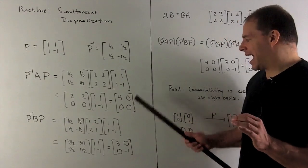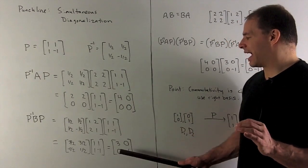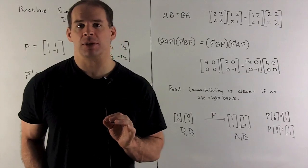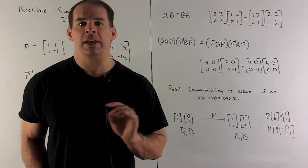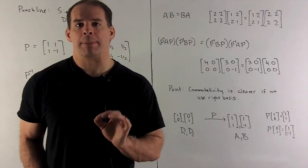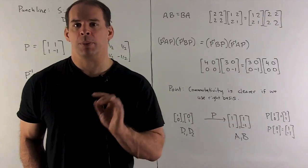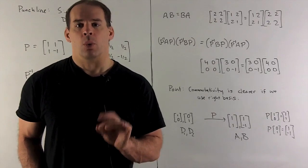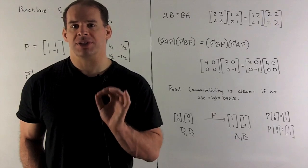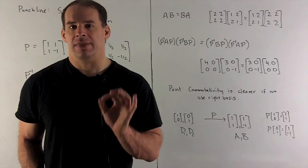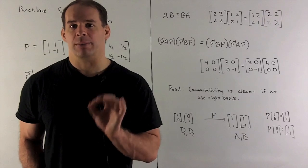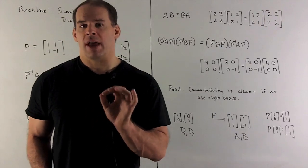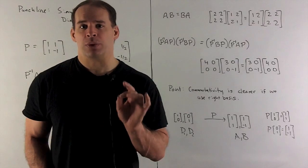Simultaneous diagonalization puts both matrices in diagonal form using the same matrix P. Let's bring things back to commutativity: we showed AB equals BA by brute force matrix multiplication. Once we do our change of basis, the commutativity becomes self-evident — we're just making the statement that diagonal matrices commute. When you don't have a diagonalizing basis, that's where things get interesting.